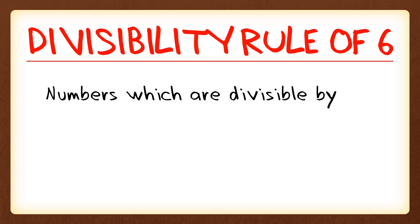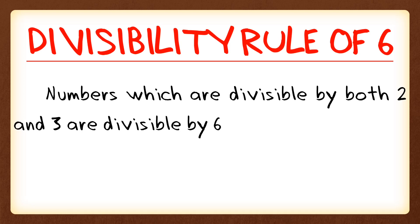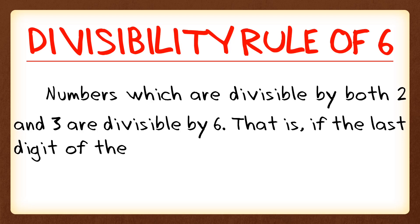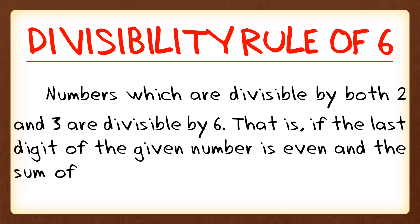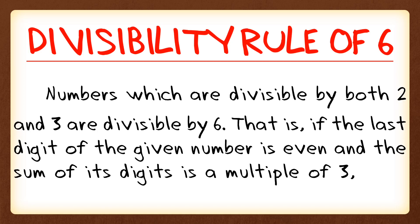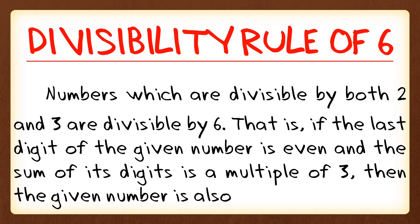Divisibility rule of 6: if the number is divisible by both 2 and 3, then it is divisible by 6. That is, if the last digit of the given number is even and the sum of each digit is a multiple of 3, then the given number is also a multiple of 6. It's quite complicated, but we're going to take it easy.